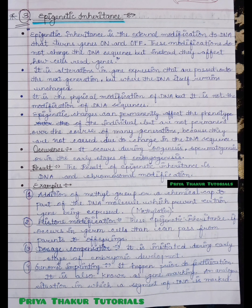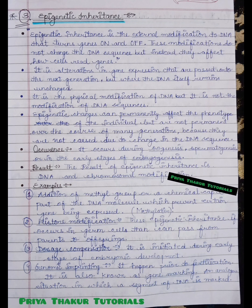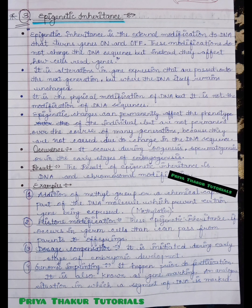The DNA itself remains unchanged. Epigenetic inheritance is the physical modification of DNA, but it is not a modification of the DNA sequence. Epigenetic changes can permanently affect the phenotype of an individual, but they are not permanent over the course of many generations because they are not caused by changes in the DNA sequence.